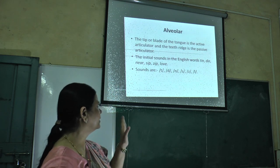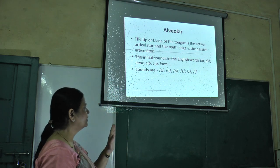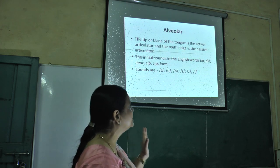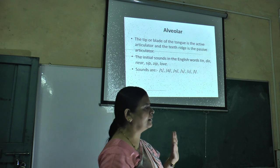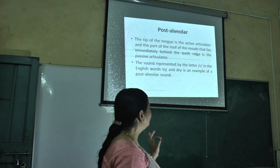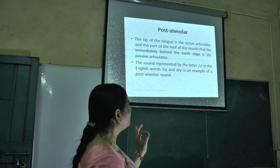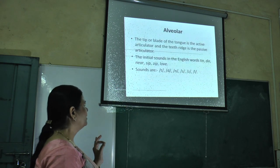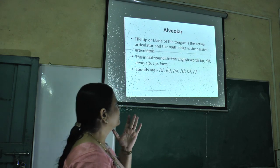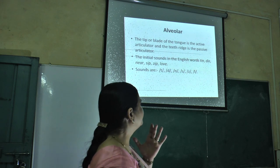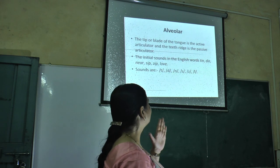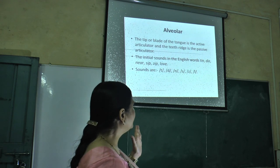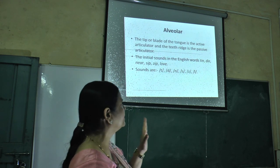The sounds are /t/, /d/, /n/, /s/, /z/, and /l/. Whenever we pronounce these sounds, we find that the tip of the tongue is touching the active articulator — the teeth ridge.